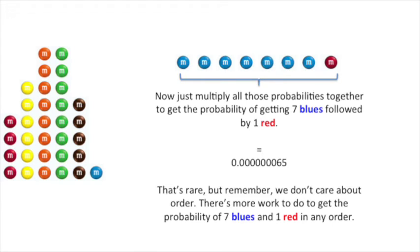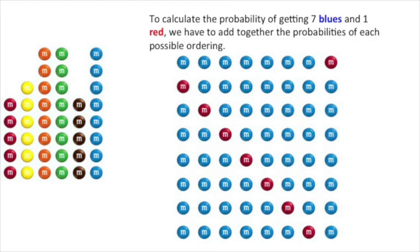That's rare, but remember we don't care about order. There's more work to do to get the probability of 7 blues and 1 red in any order. To calculate the probability of getting 7 blues and 1 red, we have to add together the probabilities of each possible ordering. The good news is that the process of calculating the probabilities is the same as what we just did.